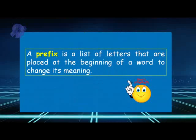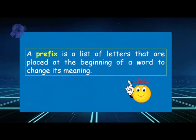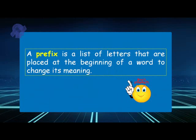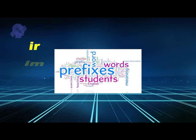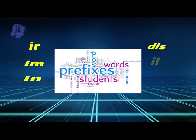A prefix is a set of letters put at the beginning of a word to create a new word. In today's episode we are going to deal with six prefixes: un, in, il, dis, ir, and im. When we add a prefix to a word we generally get a word with an opposite meaning. In the next activity this is exactly what we are going to practice.